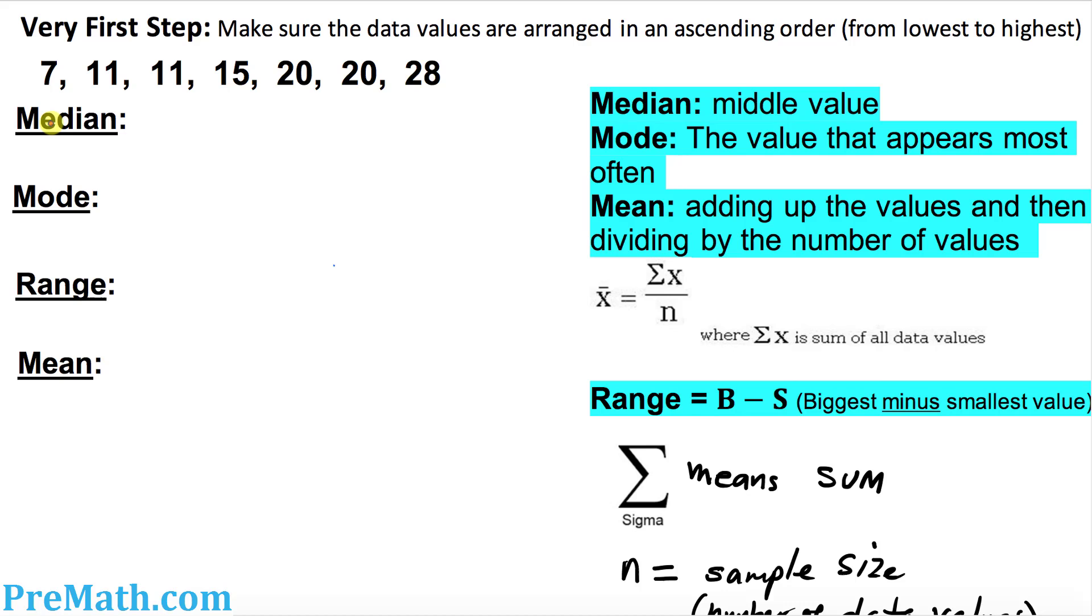So the very first thing we want to find out is median. Median is nothing more than just a middle number. What is the median over here? Obviously, 15 is the median number because three values are on the left-hand side and three values on the right-hand side. So median is 15.